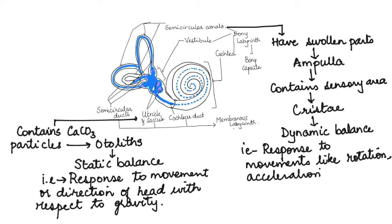So the entire vestibular system — containing the utricle, saccule, and semicircular canals — deals with the balance of the body. The cochlea deals with hearing, which we will see in the next video.